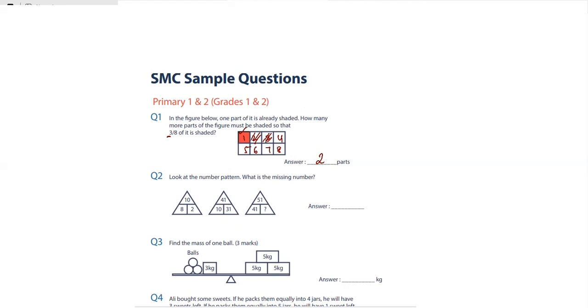Now let's read question number two. Look at the pattern. What is the missing number? If you look at the pattern, 8 plus 2 is 10. The second one, 10 plus 31 is 41. So the third one, 41 plus 10 will be 51. What will be there in the question mark? It will be number 10.